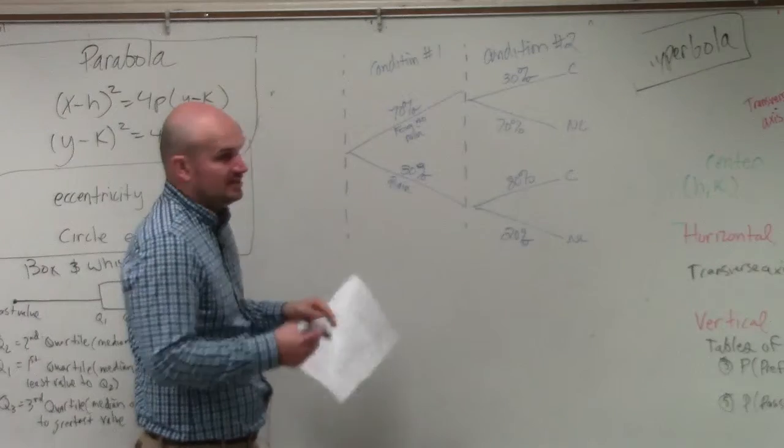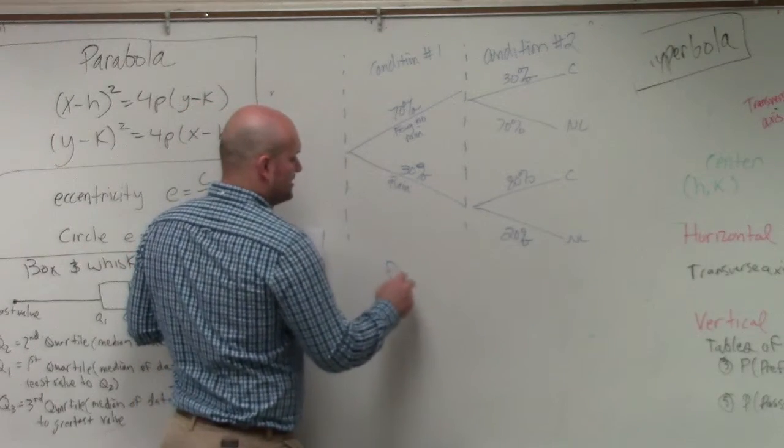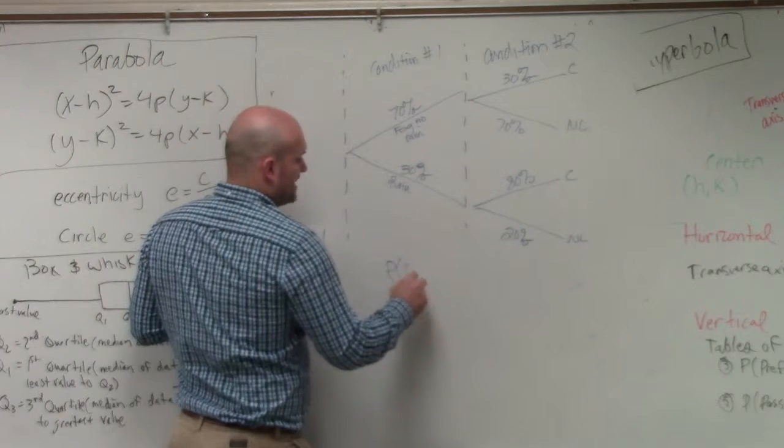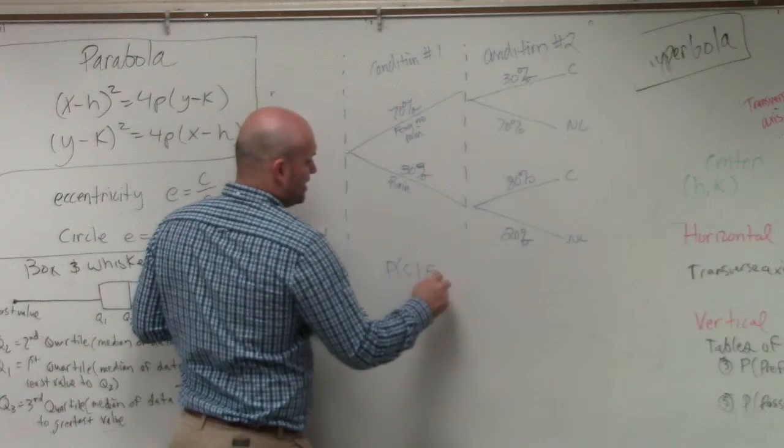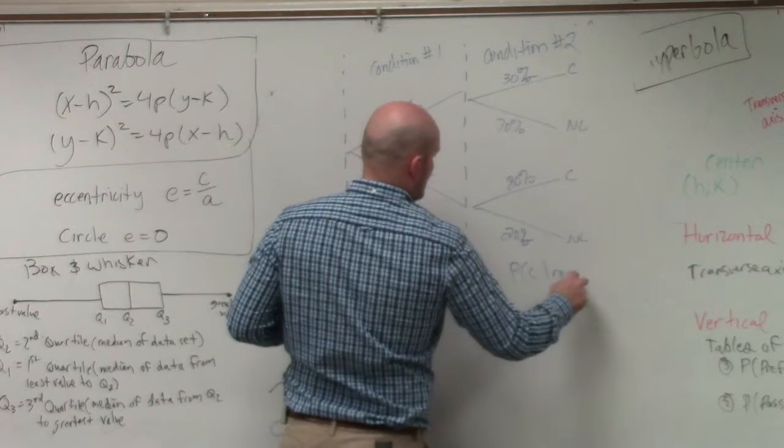So what we're going to do is, we have to basically find the probabilities of both of them. So probability that it's canceled such that there is fog, and the probability that it's canceled such that there is rain.